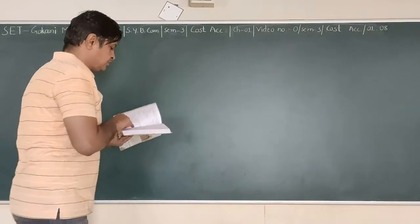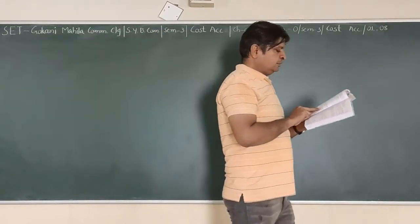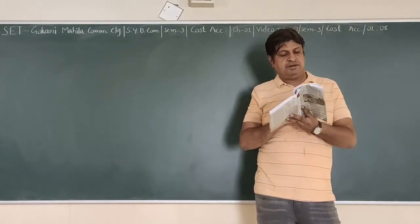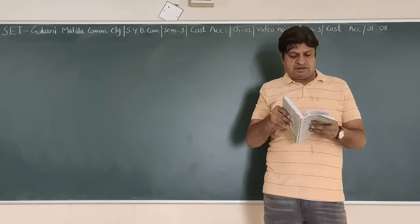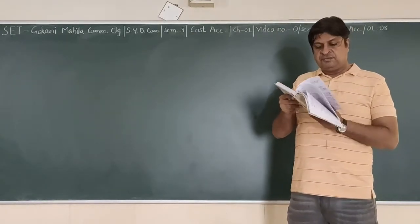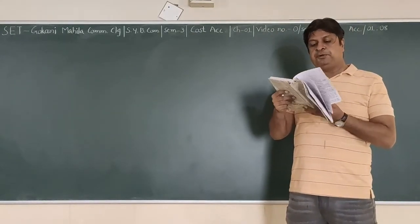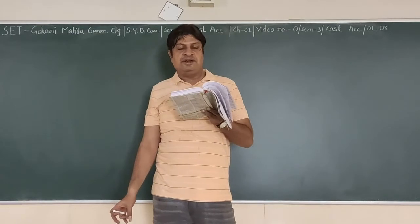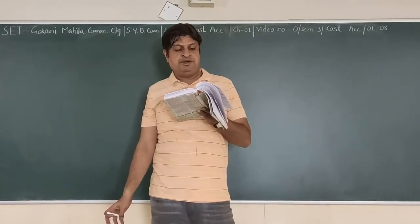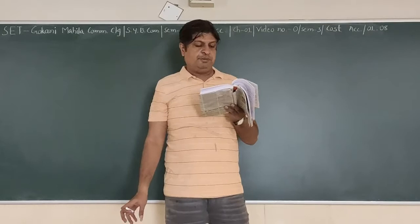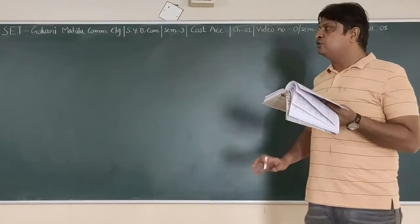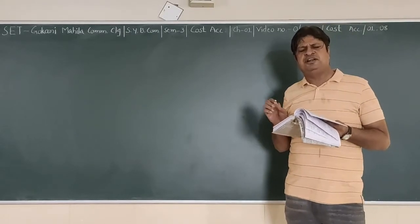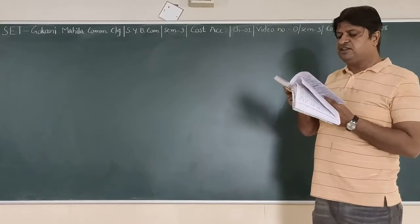Good morning students. This is Machinic Post, Day No. 104, Sum No. 90. See, from the following information, calculate the economic order quantity, ordering level, minimum level, maximum level, average level, and danger level. All the details are covered in this problem.